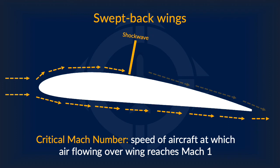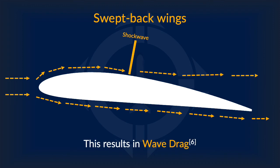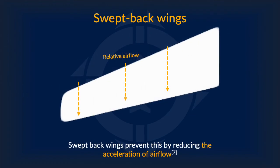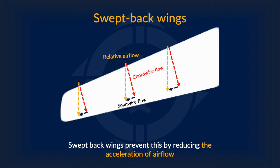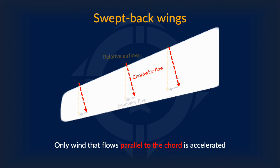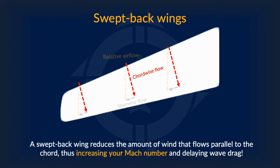Let's say a shockwave has formed on this spot. The air past the shockwave is greatly disrupted, tripping the airflow and making it turbulent. The air also separates from the wing, resulting in tons of drag and less lift. So how does a swept back wing prevent this? It simply reduces the acceleration of airflow. Due to the angle of the wing, the relative airflow is split into two parts: chord-wise and span-wise. Span-wise is wind that goes along the edge of the wing, while chord-wise is perpendicular to that, like the vertical and horizontal components of any force vector. Only wind that flows parallel to the chord is accelerated, so a swept back wing reduces the amount of wind flowing parallel to the chord, thus increasing your critical Mach number and delaying wave drag.